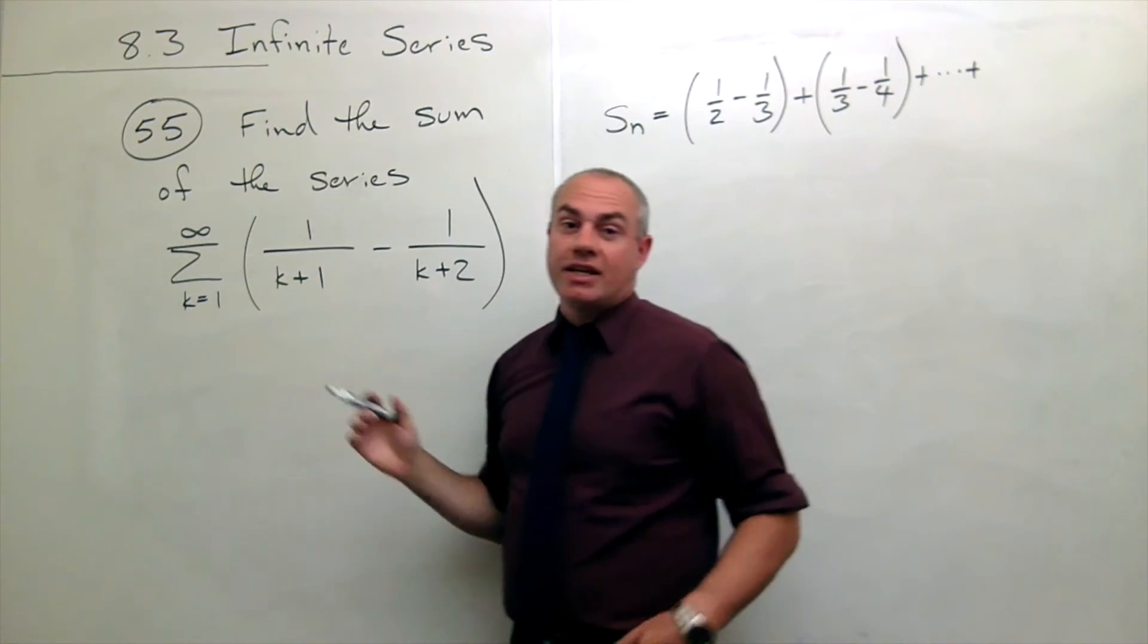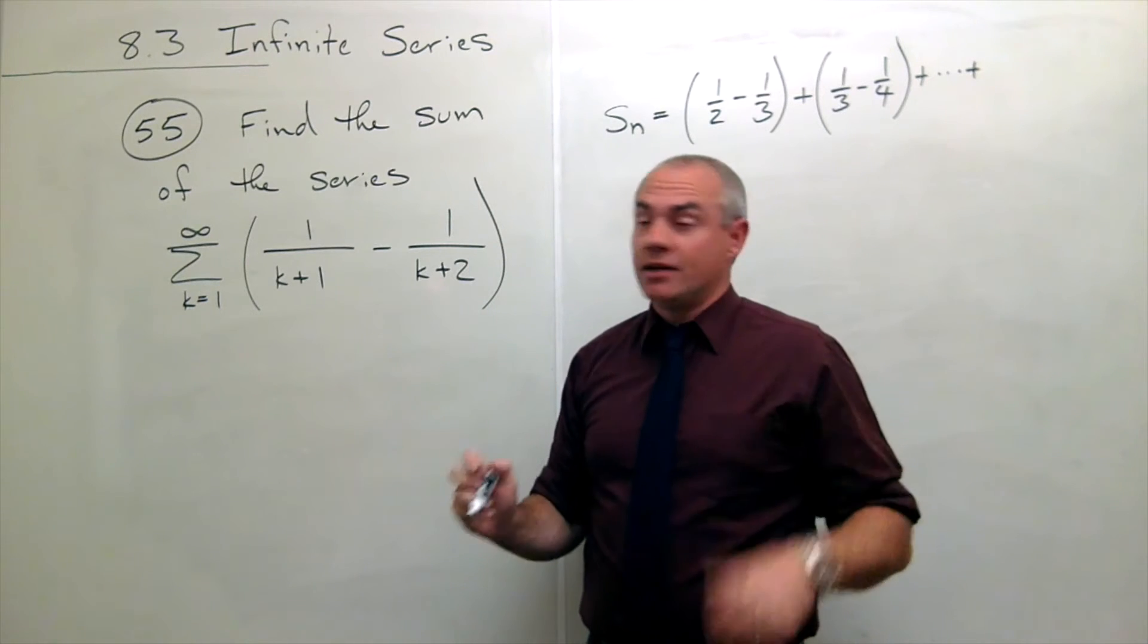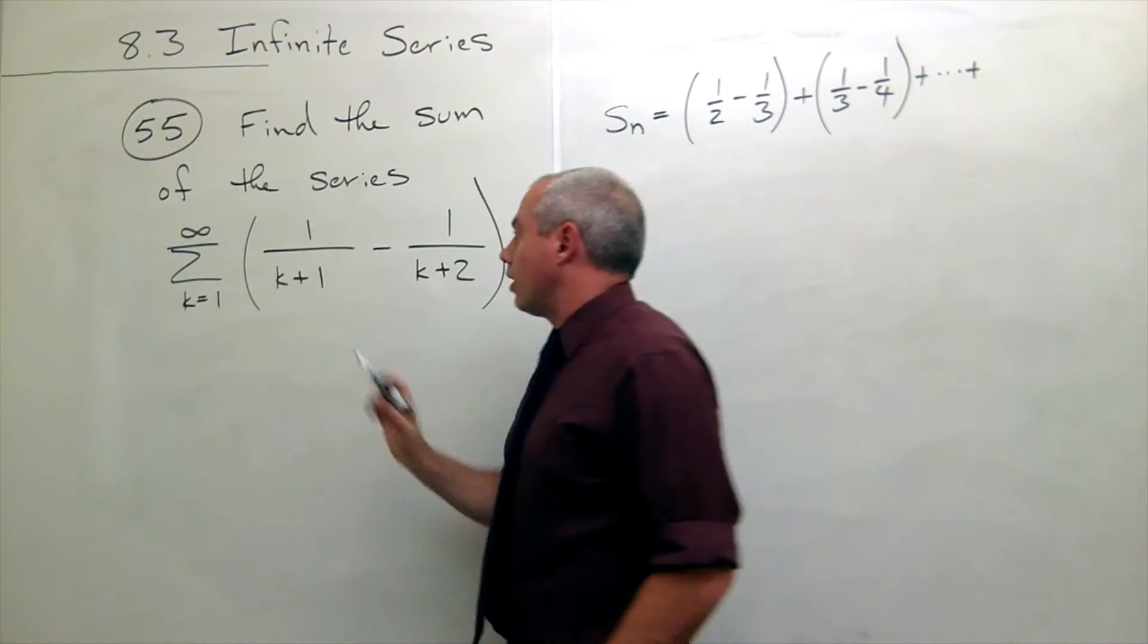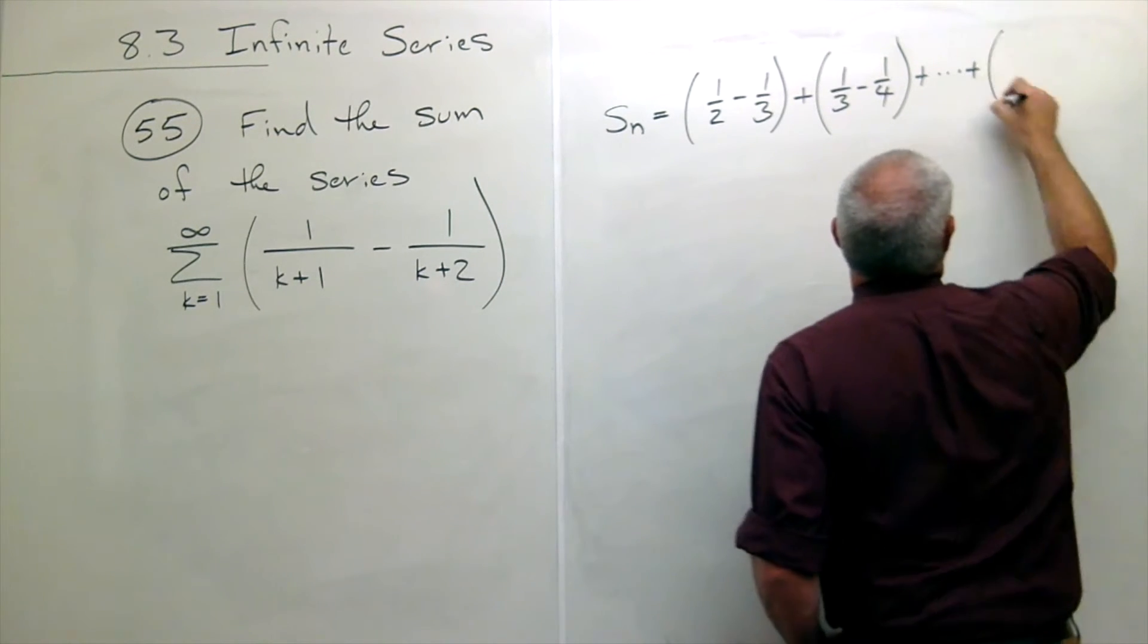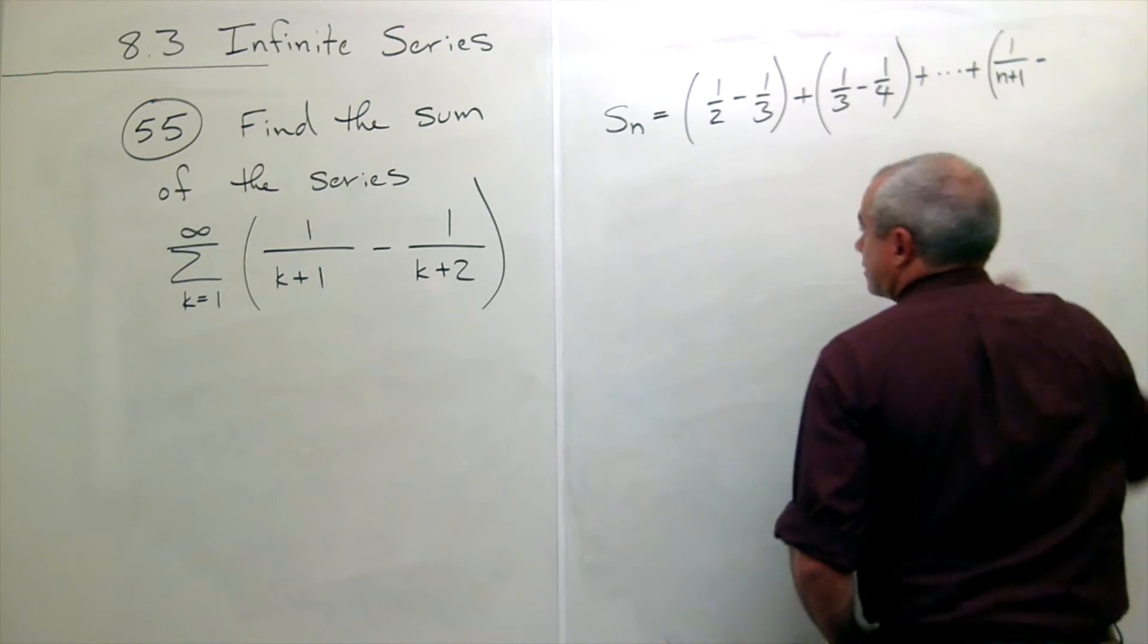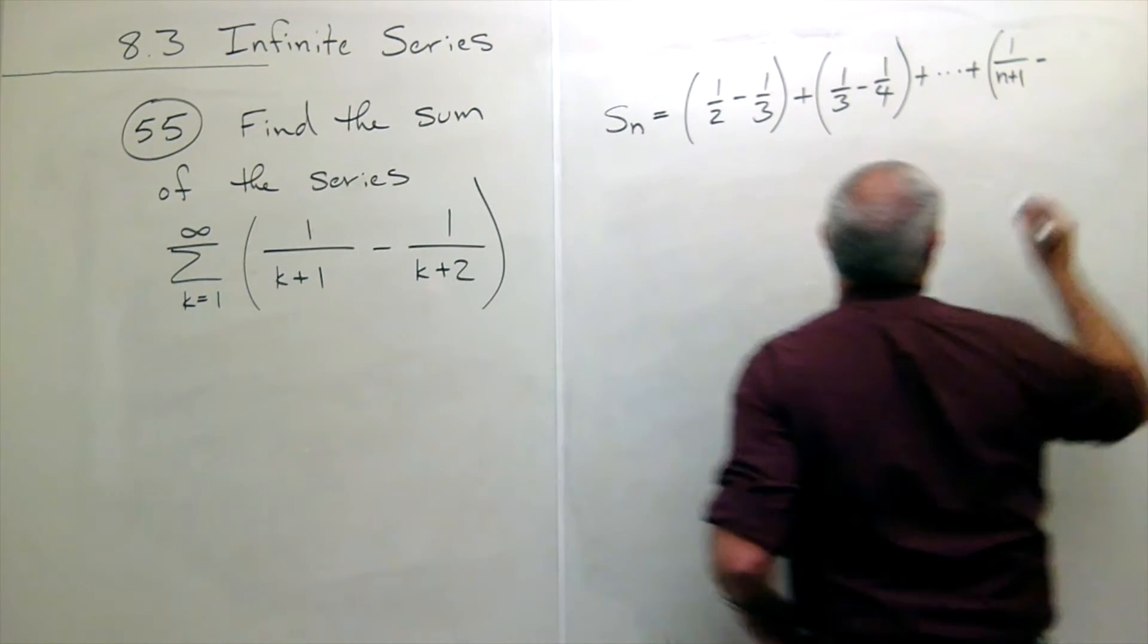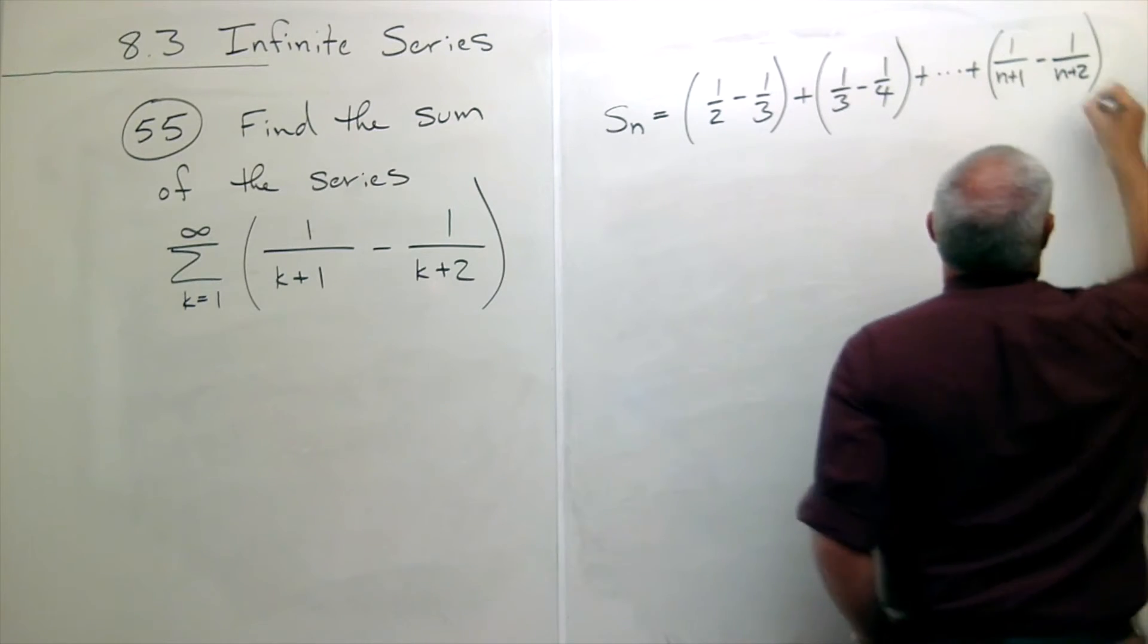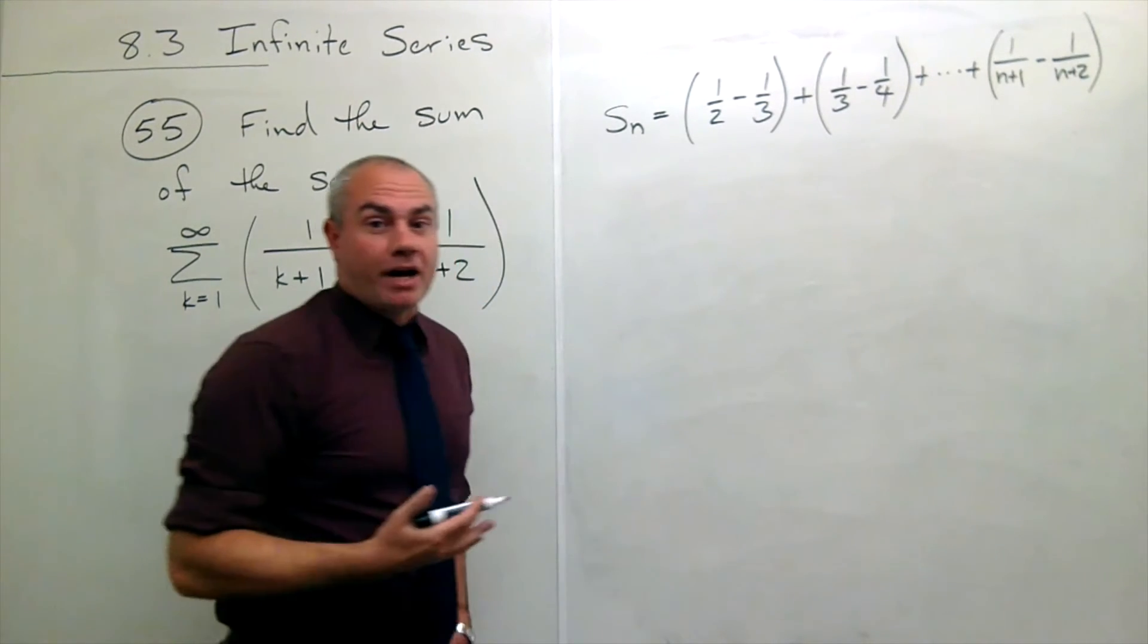Until I got to the nth guy. So the nth one would be 1 over n plus 1 minus 1 over n plus 2. Now what's really cool about this series is this telescopes down.